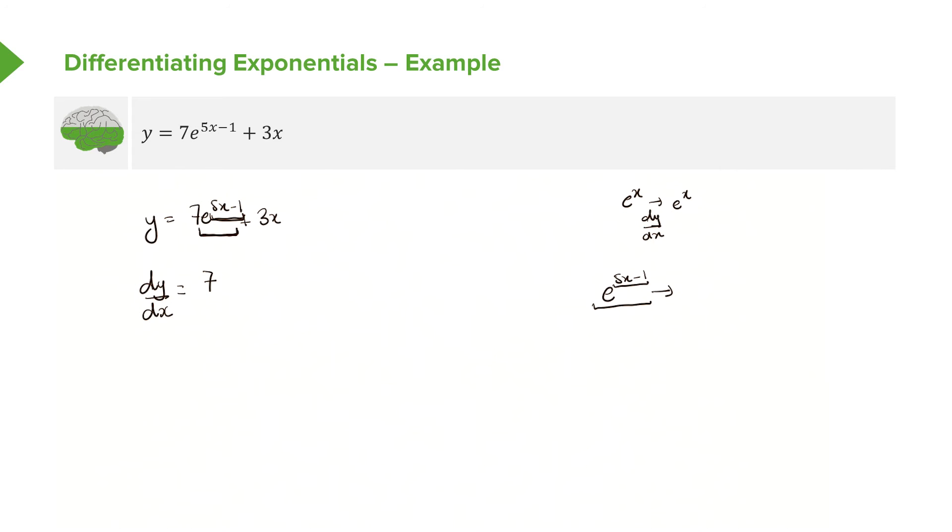But the good thing here, or perhaps the unusual thing here, is when we differentiate e to the power of anything as a whole, it doesn't change. Because e^x differentiates to e^x. So e^(5x-1), when you look at it as the outside function, just simply goes to e^(5x-1). And then don't forget, we have to multiply this with the differential of the inside function. So we can say that this is our inside function. Differential of 5x-1 is 5. So the answer to that is just going to be 5e^(5x-1). So that is the differential of e^(5x-1).